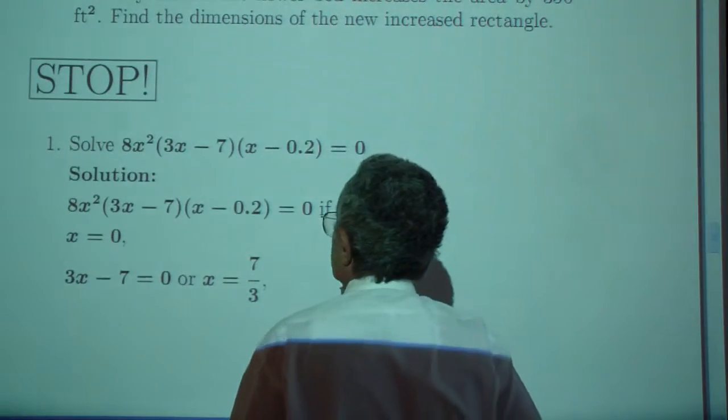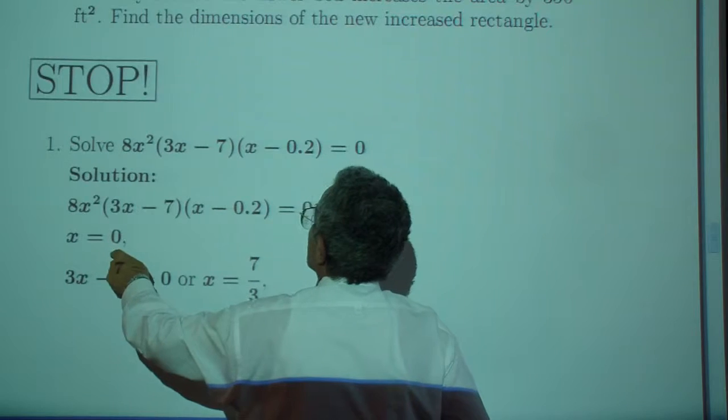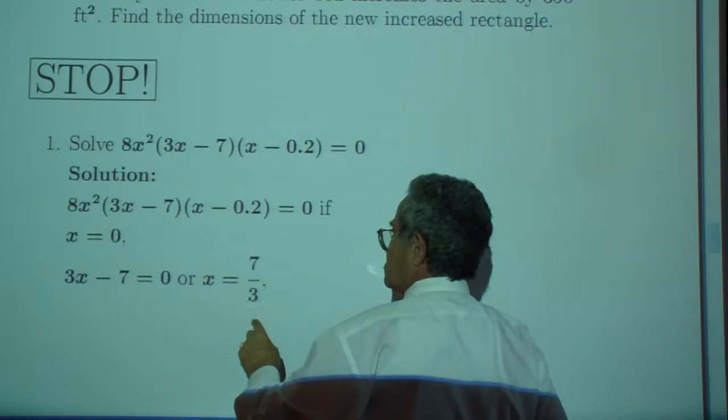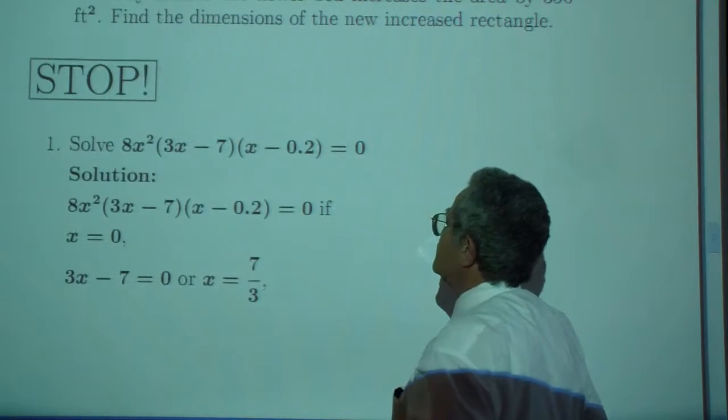Solution to exercise one. X can be zero, X can be seven over three, X can be positive point two.